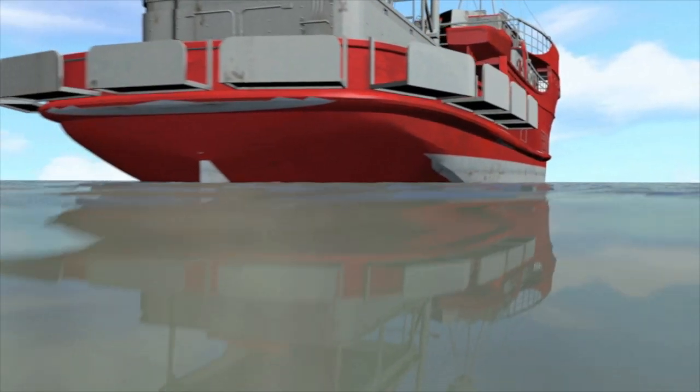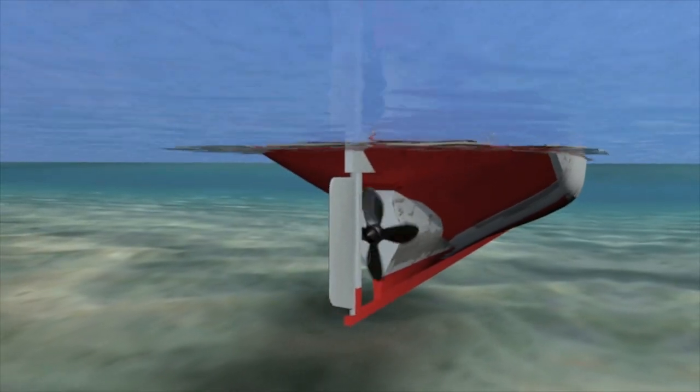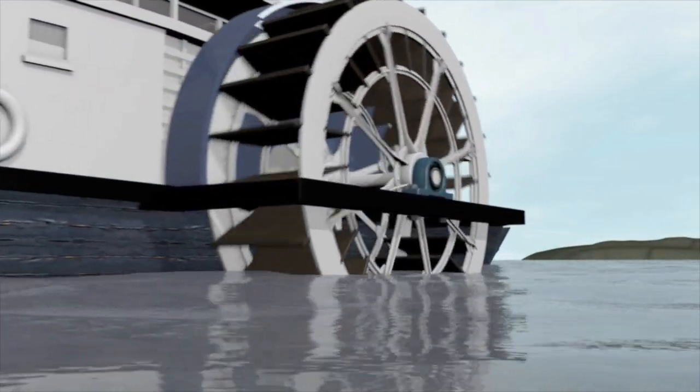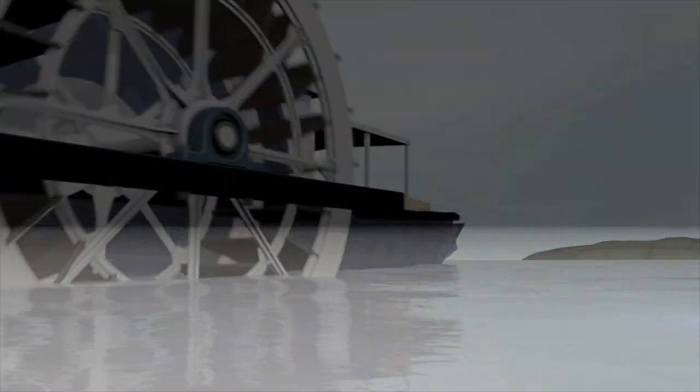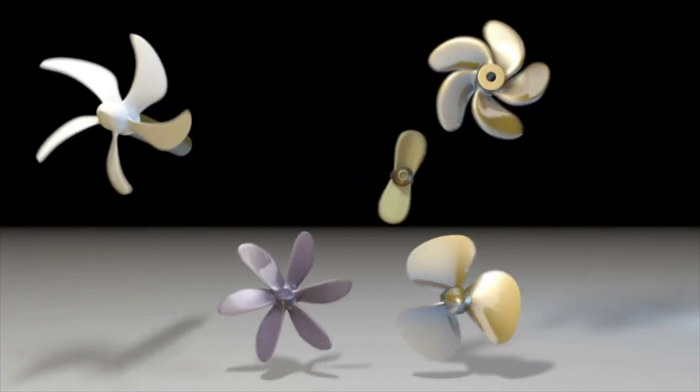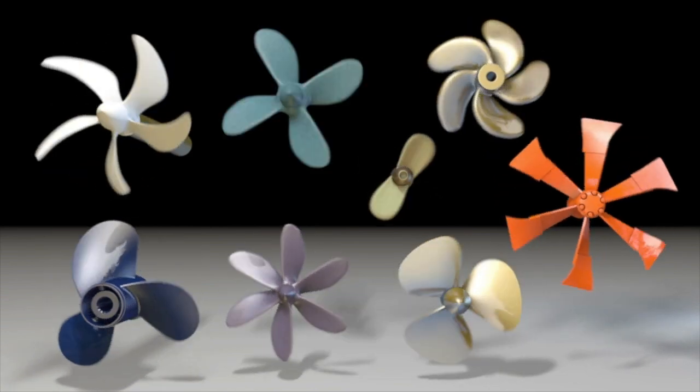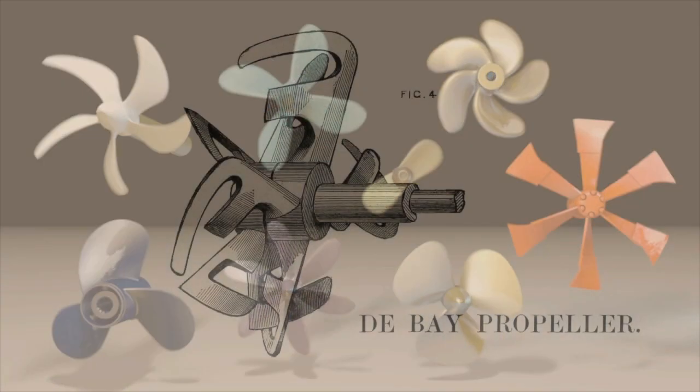The superiority of the screw propeller over the paddle wheel for the propulsion of ocean-going ships was generally accepted by the end of 1845. But exactly which type of screw propeller was best remained very unsettled and led to a host of fantastical designs.